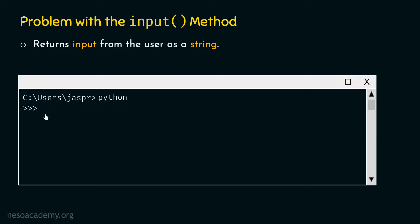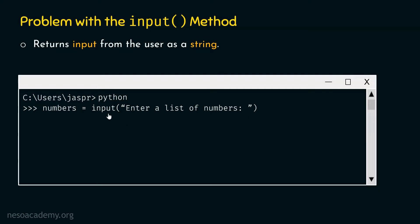Let's say the requirement is to receive a list of numbers from the user. We will give the prompt 'enter a list of numbers' as an argument to the input method. We type: numbers = input('enter a list of numbers'). This will print the prompt on the screen and ask the user to enter numbers. After receiving input, the numbers variable will point to that list.